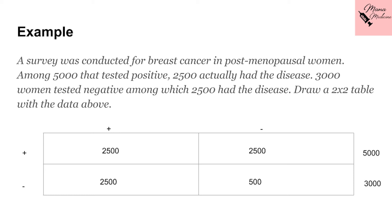By basic arithmetic we can calculate the rest of the data. We know the total positive tests are 5000, and 2500 are the ones that are actually positive, so the rest will be 2500. And we know that 3000 tests are negative, but among those 3000 negative tests, 2500 actually have the disease — so they are not really negative. Therefore, 3000 minus 2500 gives us 500.